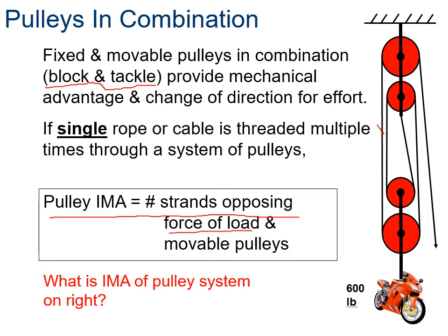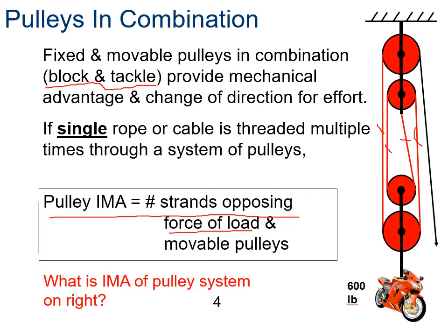We're going to count: this is one strand, this is a second strand, this is the third strand, and this is a fourth one. This one we're not going to count because we're pulling down and it's not opposing our load. So we have four strands, so the IMA in this case is going to be four. What that means is that if I've got 600 pounds, I only need to provide one-fourth of that weight, which is 150 pounds. So 150 pounds pulling down isn't too hard. I can use my weight to help me as well if I'm trying to pull down.